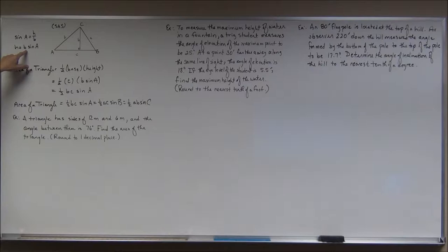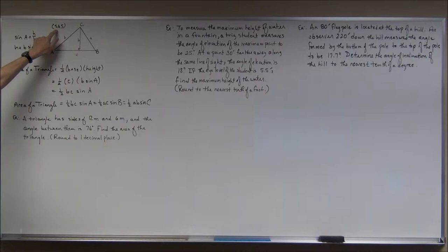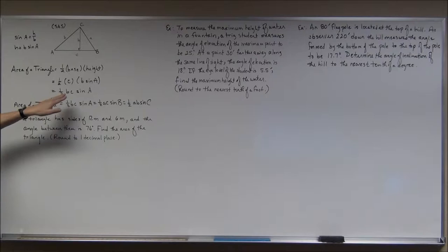Multiply both sides by B: the height is B times sine of A. So if I plug that in, I get one-half · B · C · sine(A). Notice that B and C are two sides, and A is the included angle — so this works when you have the side-angle-side setup.